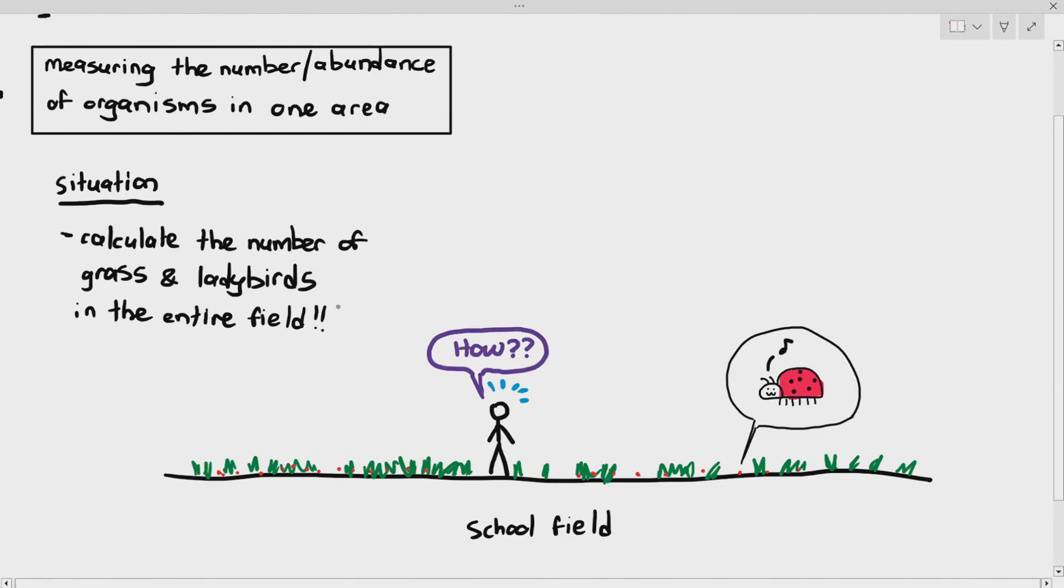There is the grass which forms one species represented in those green color things and then there are also ladybirds. And I ask you to calculate the number of grass and ladybirds in the entire field. How do I do that? Are you going to count the number of grass and the number of ladybirds in the entire field? While possible, it is a silly thing to do because you are going to waste a lot of time.